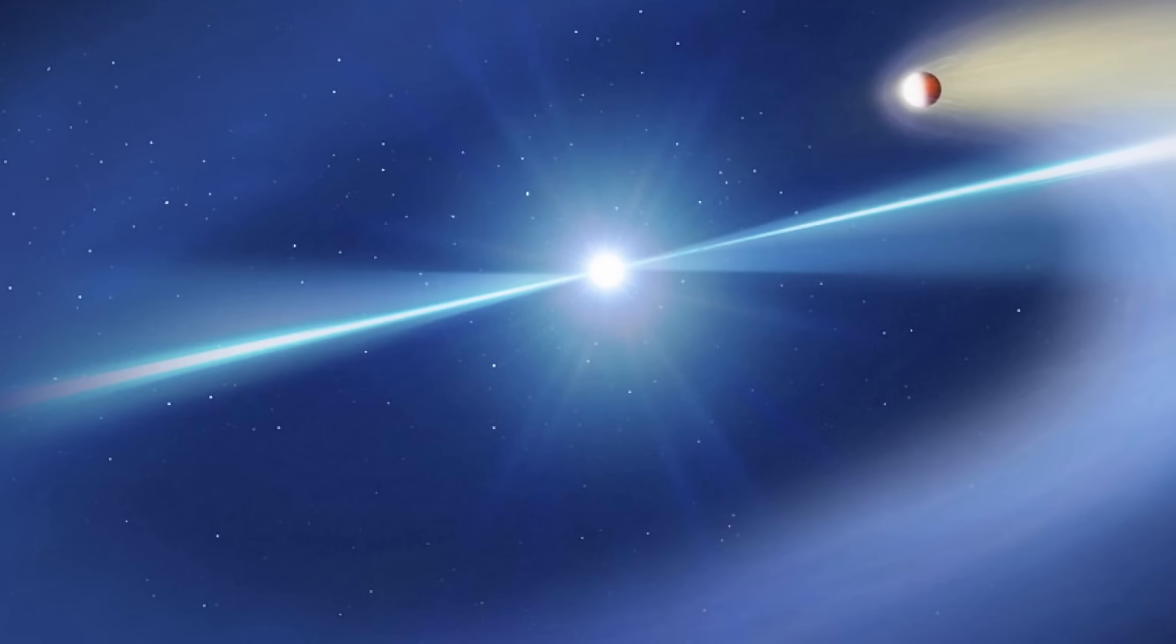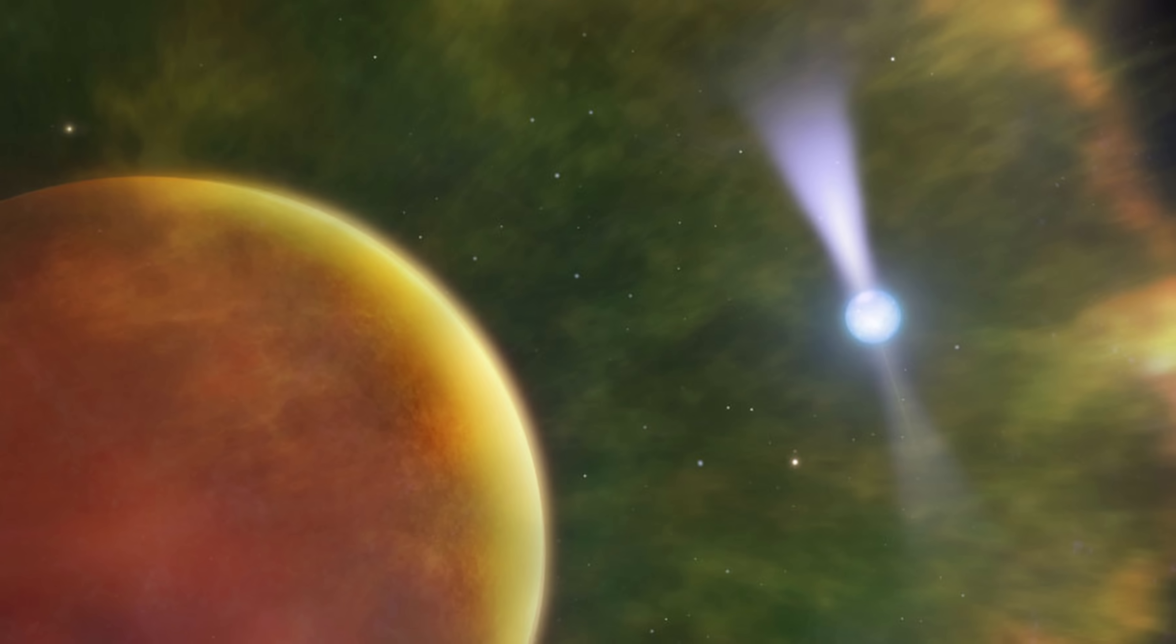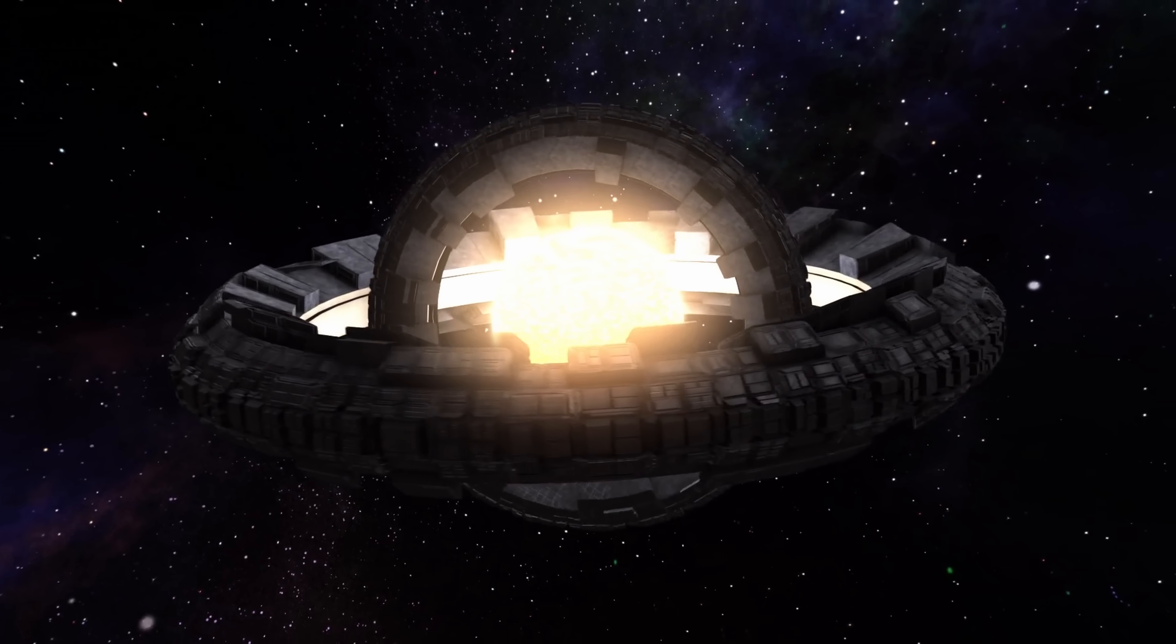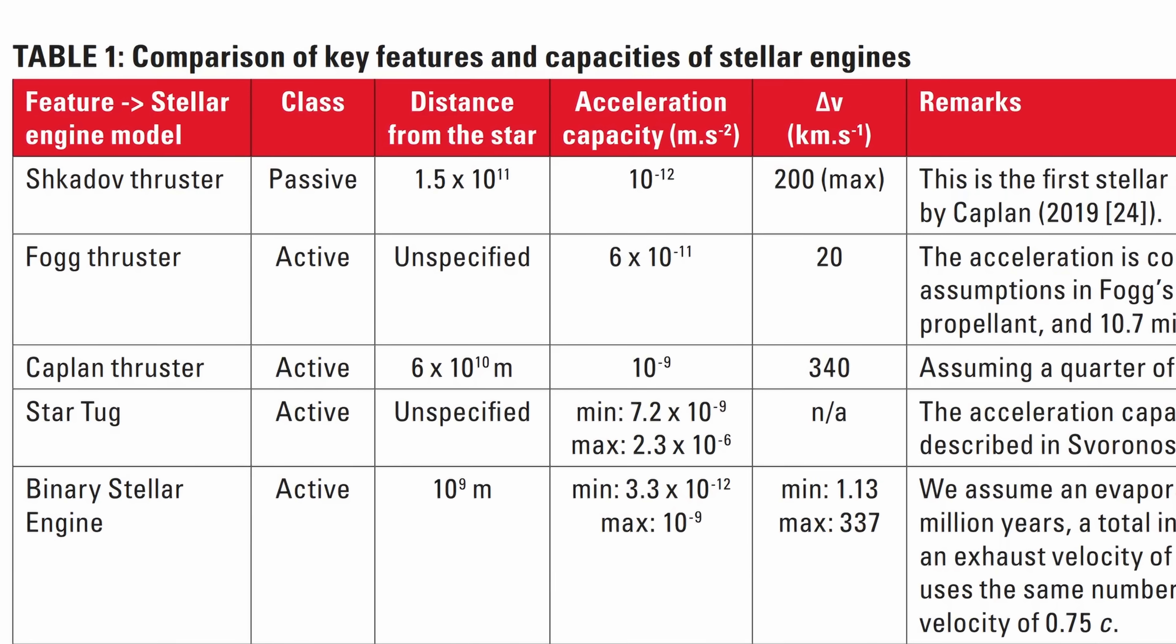And so in essence we have our payload, which would be the pulsar with approximately 1.8 solar masses, and the propellant in this case is the companion star, usually up to about 0.7 solar masses in mass. And interestingly we even get the efficiency calculations comparing this to other stellar engines, and as you can see from this table, the binary stellar engine is basically one of the best.